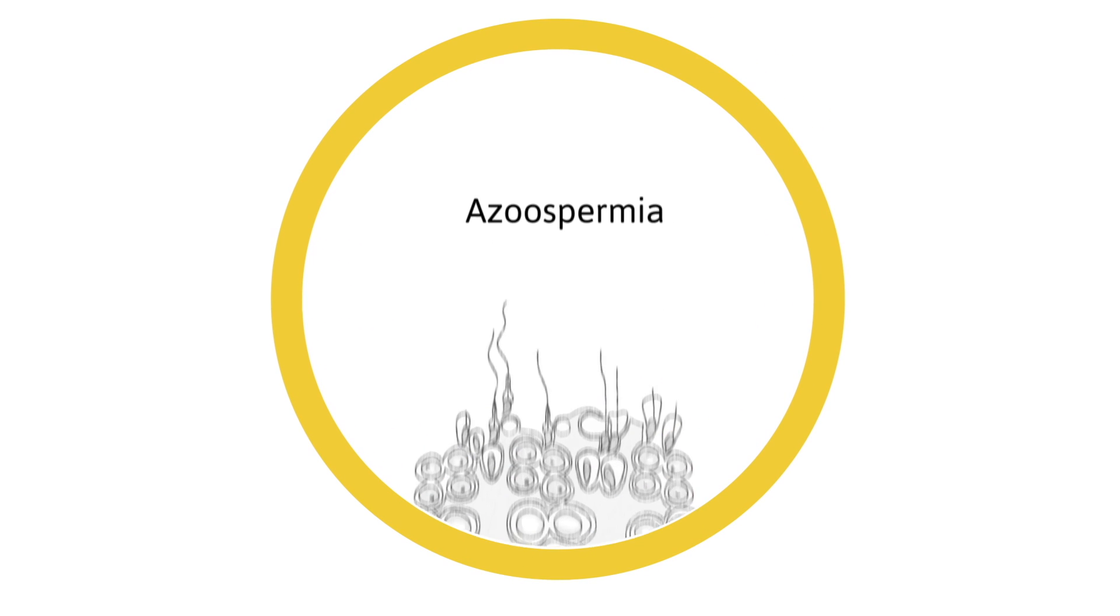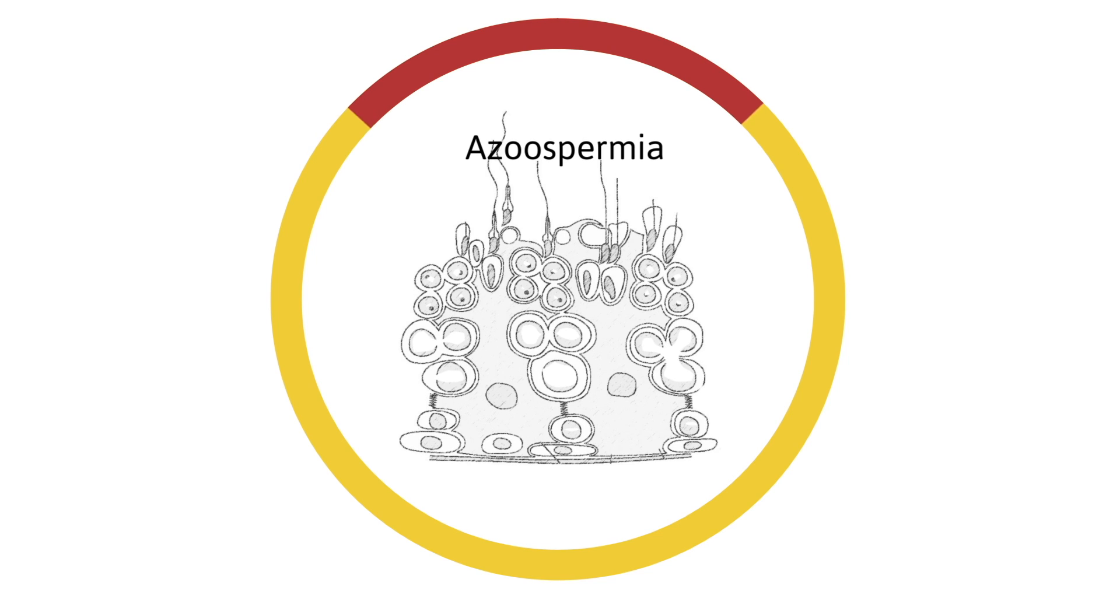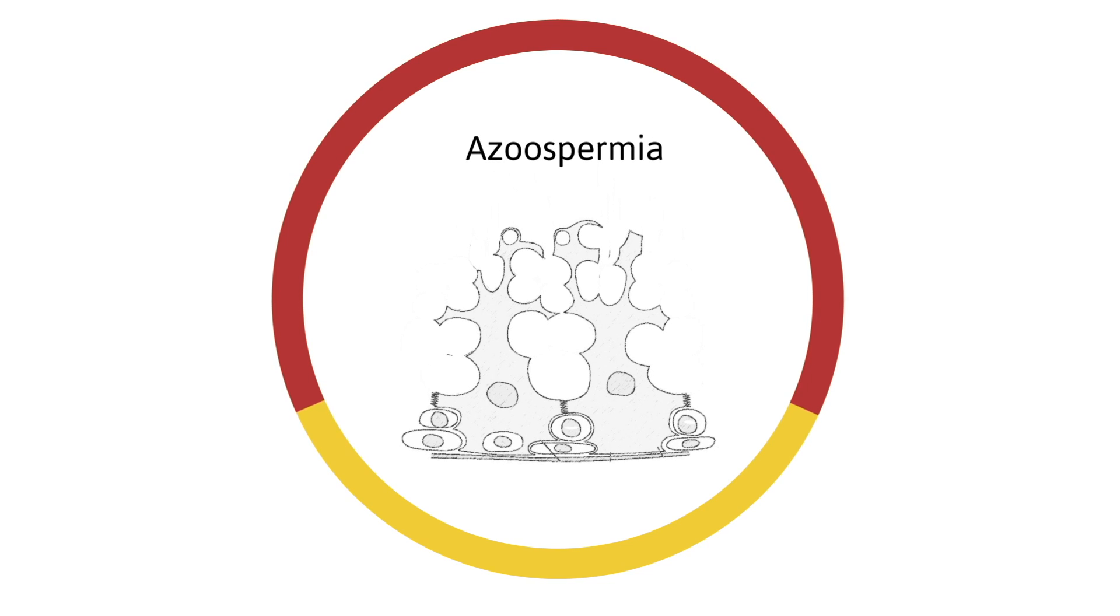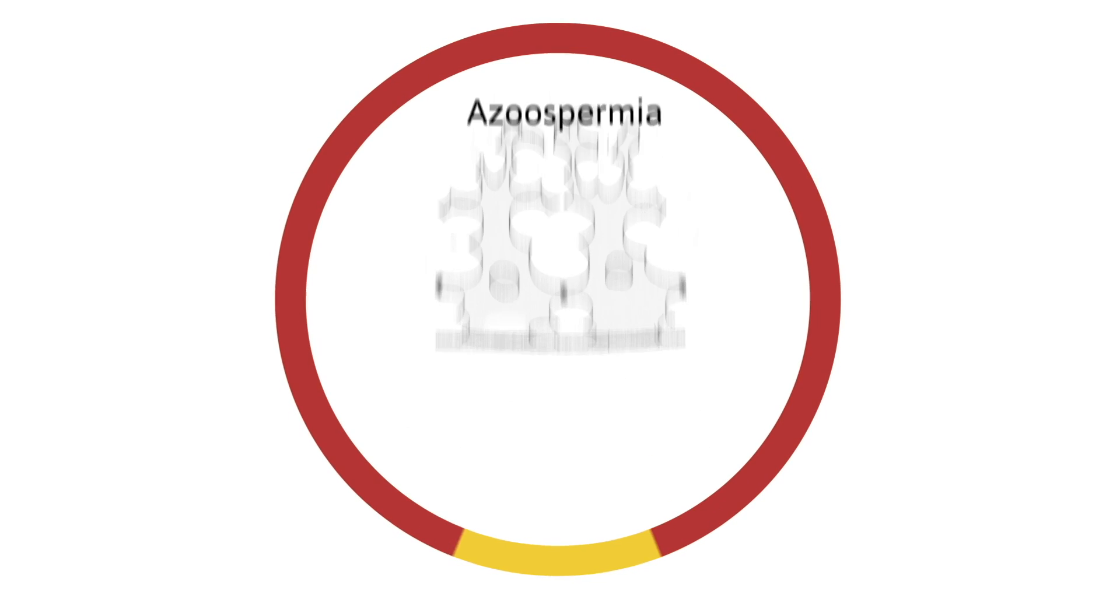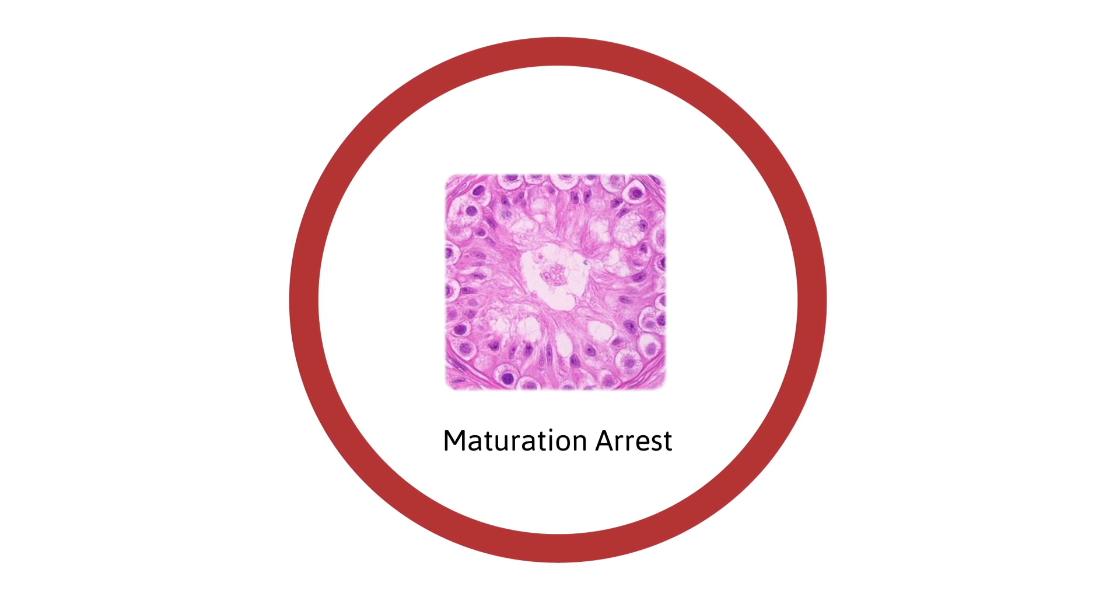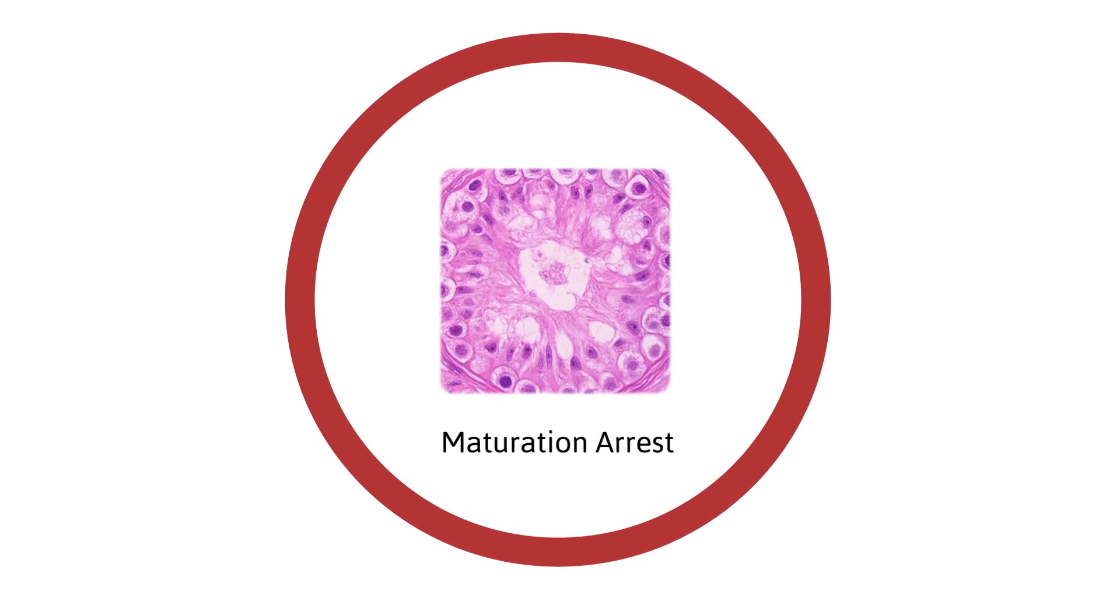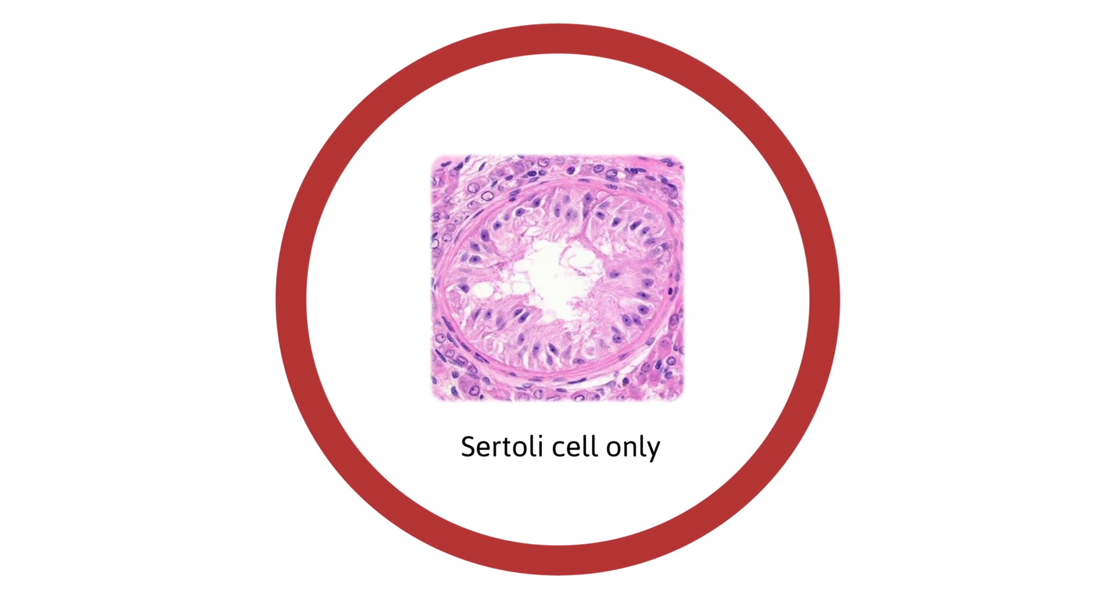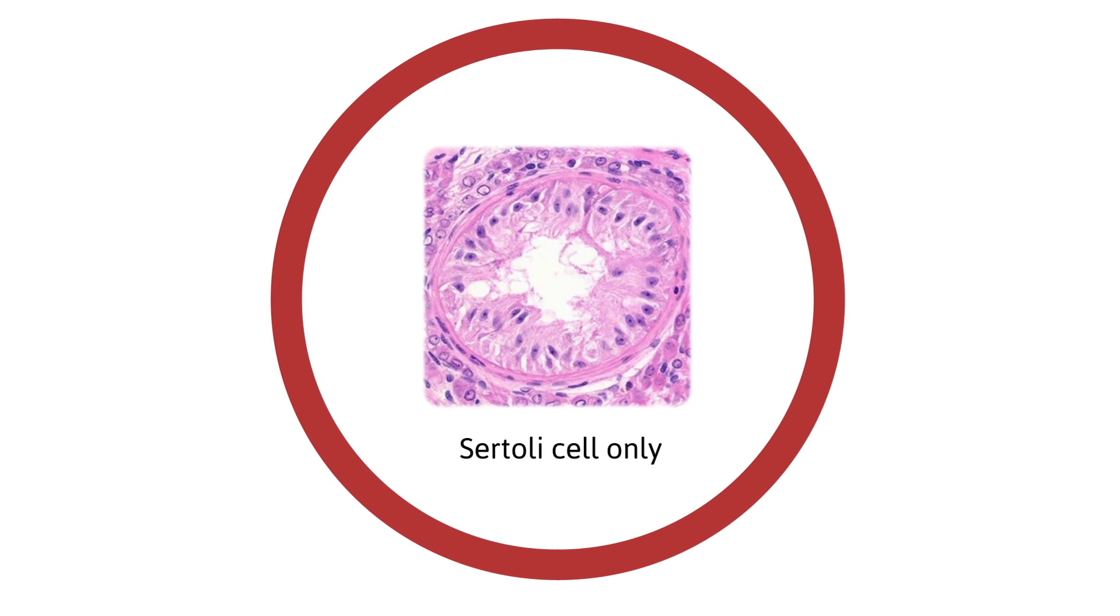In azospermia cases there is a block in sperm production. The block could be in the spermatid stage, or in the secondary spermatocytes, or in the primary spermatocyte. The histology section shows blockage in one of these stages - this we call maturation arrest. The second section shows blockage at all stages - this case we call Sertoli cell only syndrome.